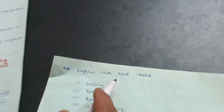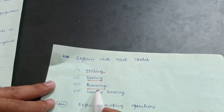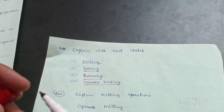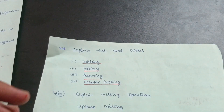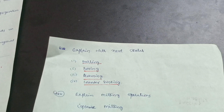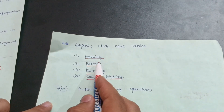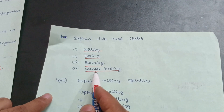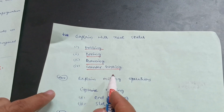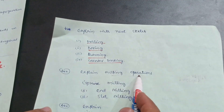Explain with neat sketches: drilling, boring, reaming, and counter sinking. Since this is a diagrammatic subject, focus more on diagrams rather than theory. Make neat sketches for these topics — drilling, boring, reaming, and counter sinking — then the rest of the theory can be written easily.